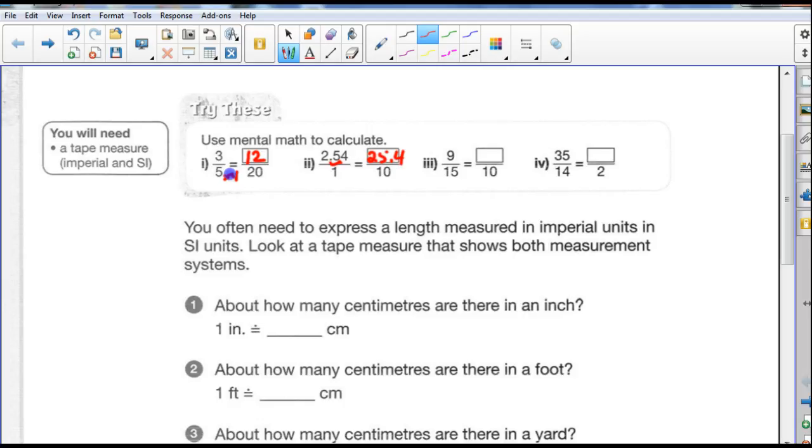9-fifteenths is the same as 1 over 10. Well, this is not quite as simple. So we have to see from 15 down to 10, it was reduced by a third. Because the number 10 is two-thirds of 15. So what number is two-thirds of 9? Six. That's a little bit of mental math that you need to know.